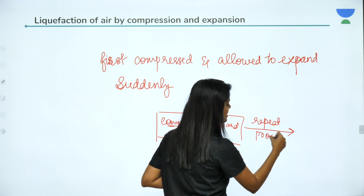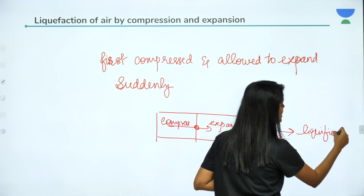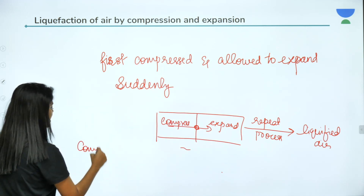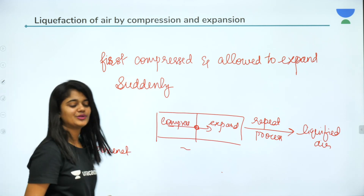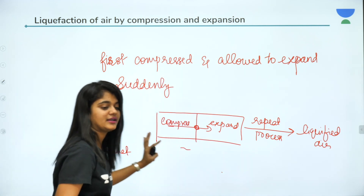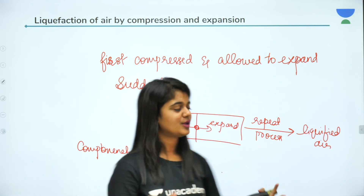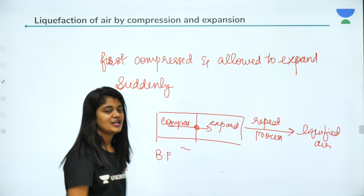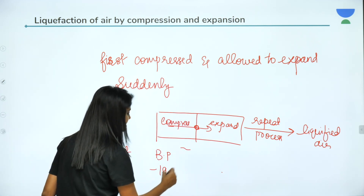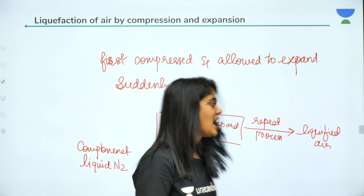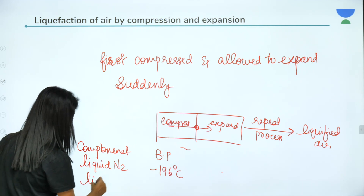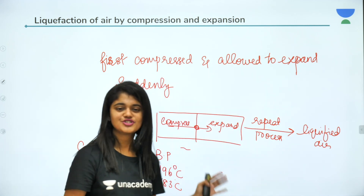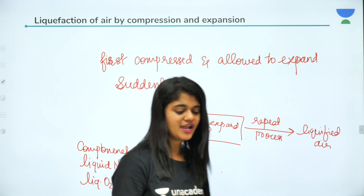After the repeated compression-expansion process, you get liquefied air. Now, the major components of liquid air and their boiling points: liquid nitrogen has a boiling point of minus 196 degrees Celsius — a very low boiling point. Liquid oxygen has a boiling point of approximately minus 183 degrees Celsius. So liquid nitrogen has the least boiling point compared to liquid oxygen.